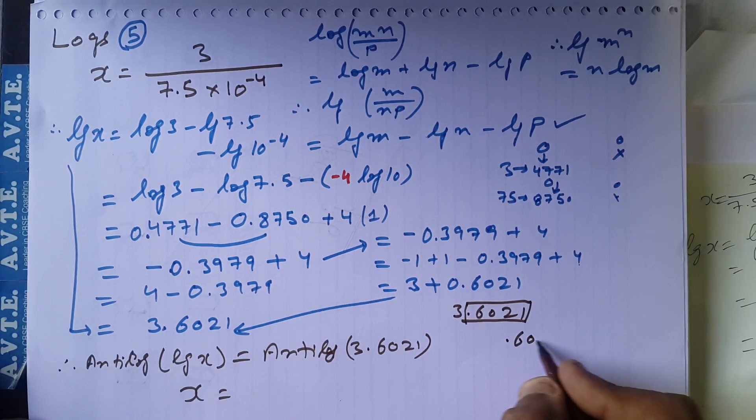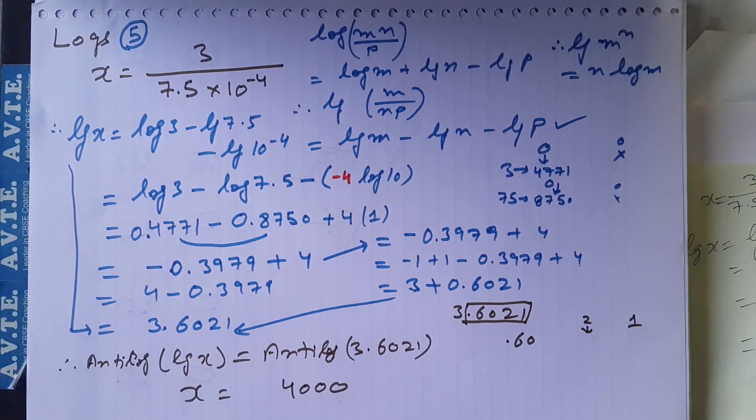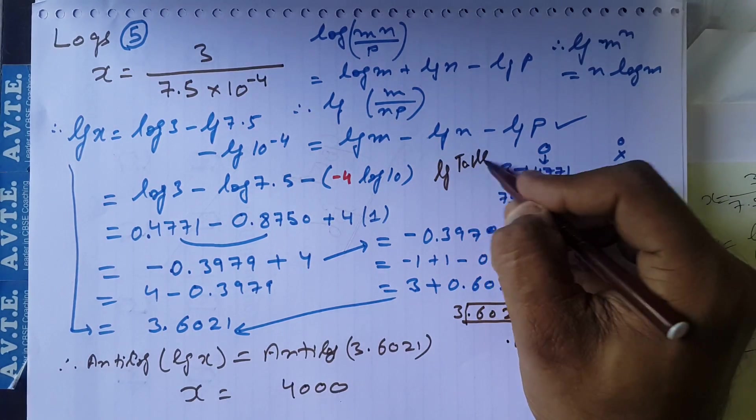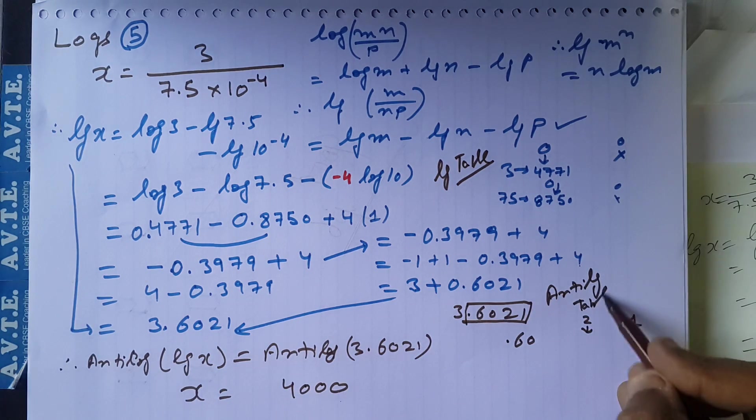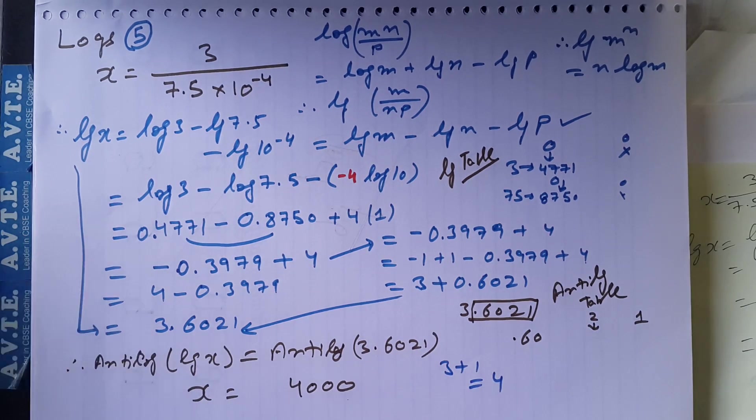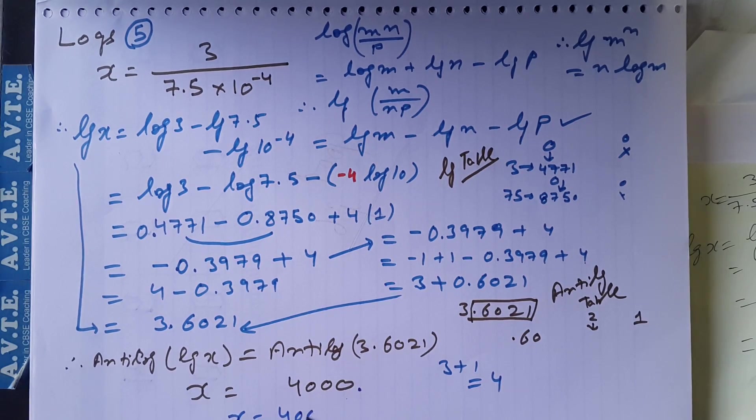So in front of 60 under 2 and adding 1, we get 400 in the antilog table. This is log table, this is antilog table. So here it is 3. Here is 3, 3 plus 1 is 4. After 4 digits you have to put a decimal. Like this, so your answer is 4000.